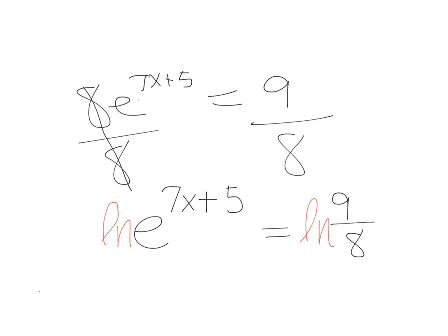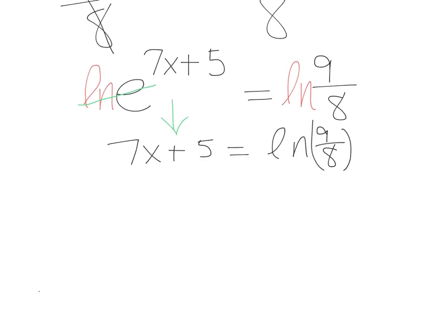So the natural log of E, that gets rid of itself, leaving us with 7x plus 5 equals the natural log of 9 over 8. I'll write that in parentheses, and let me go ahead and move this up so we can work with this now.